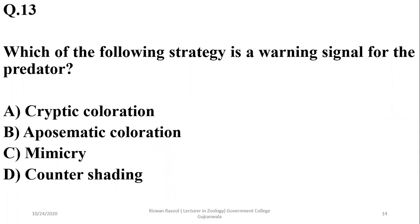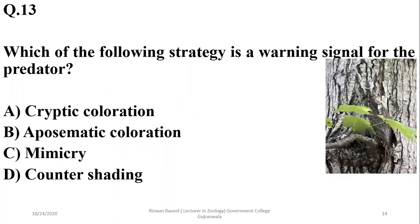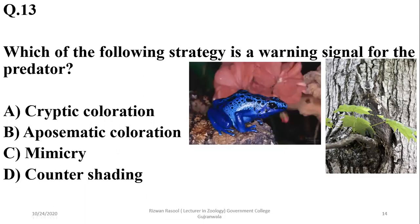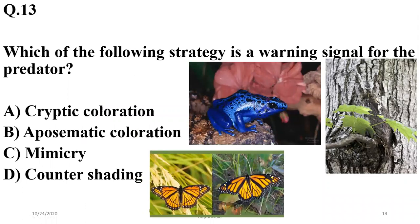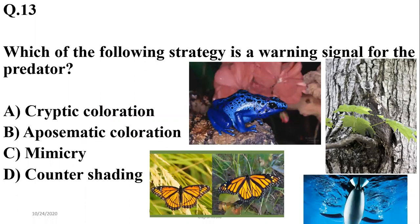It is aposematic coloration. Cryptic coloration is a type of coloration in which an animal takes on the appearance of its environment to hide itself, while in aposematic coloration an animal adopts warning colors — as you can see in this frog, it is aposematic coloration showing as a warning signal to the predator. Mimicry is a strategy in which one species mimics another for survival. Counter-shading is a strategy mostly in aquatic environments where the lower side is lightly colored and the upper side darkly colored, as in penguins. So the right option is B — aposematic coloration.